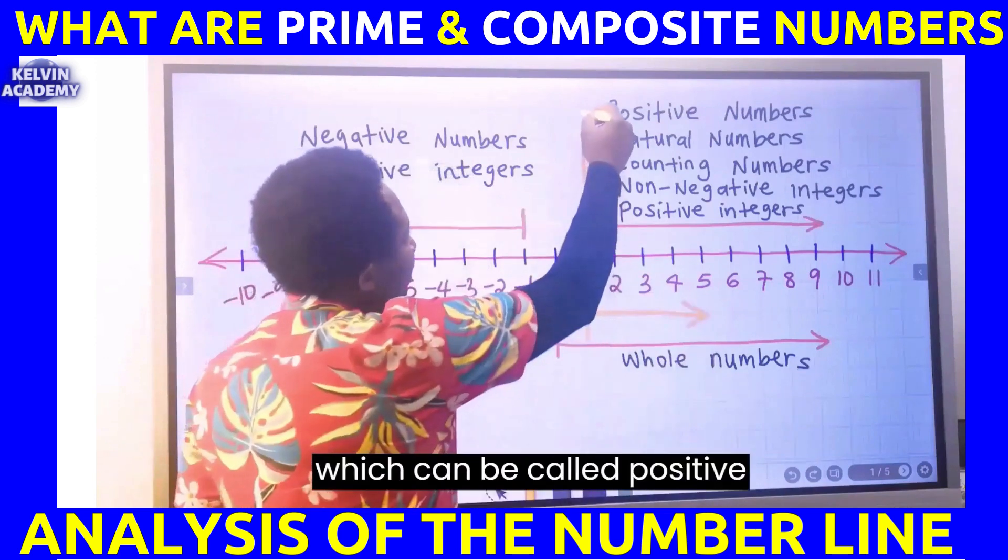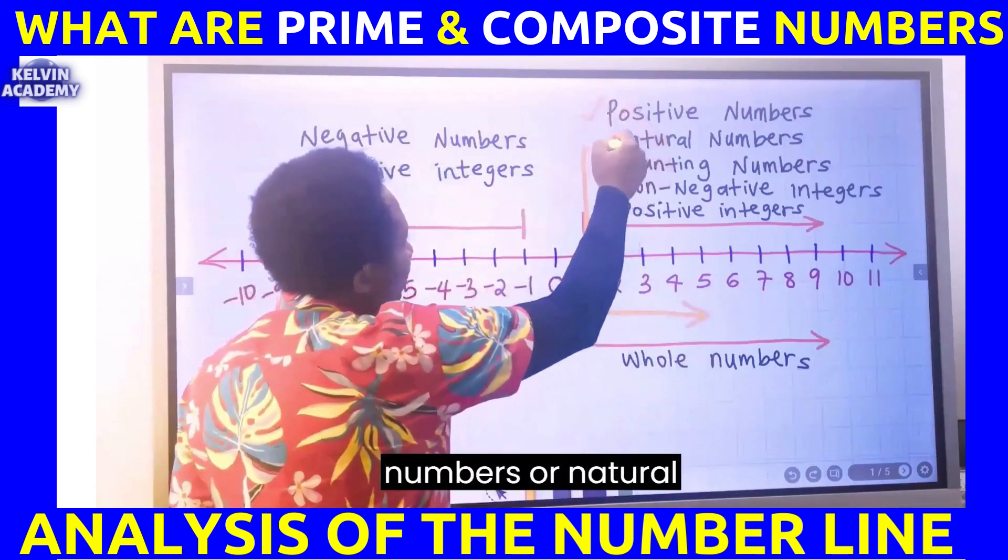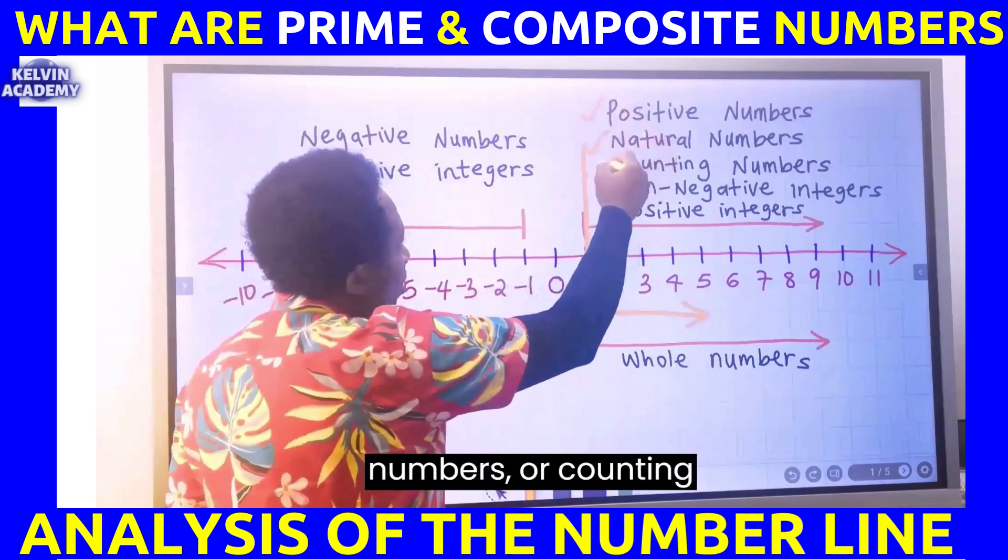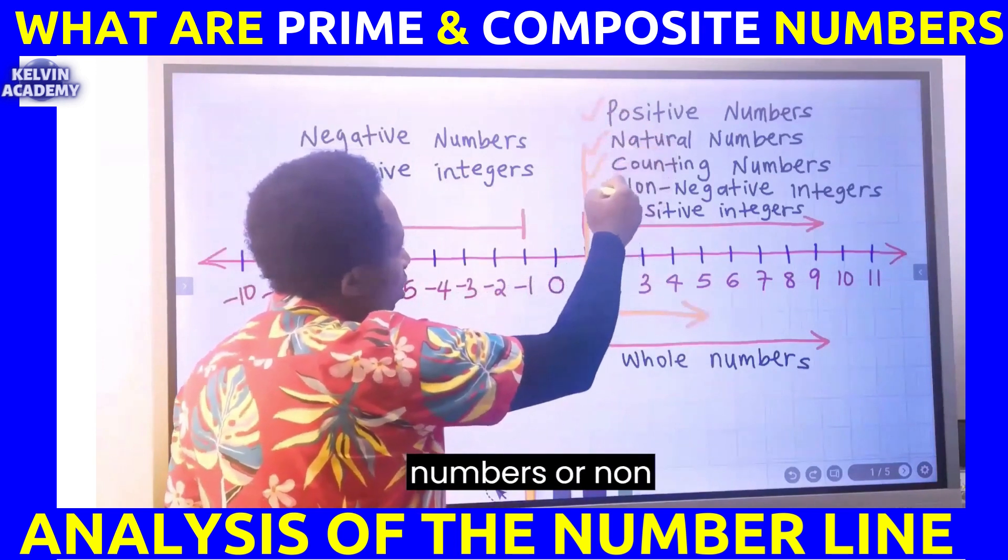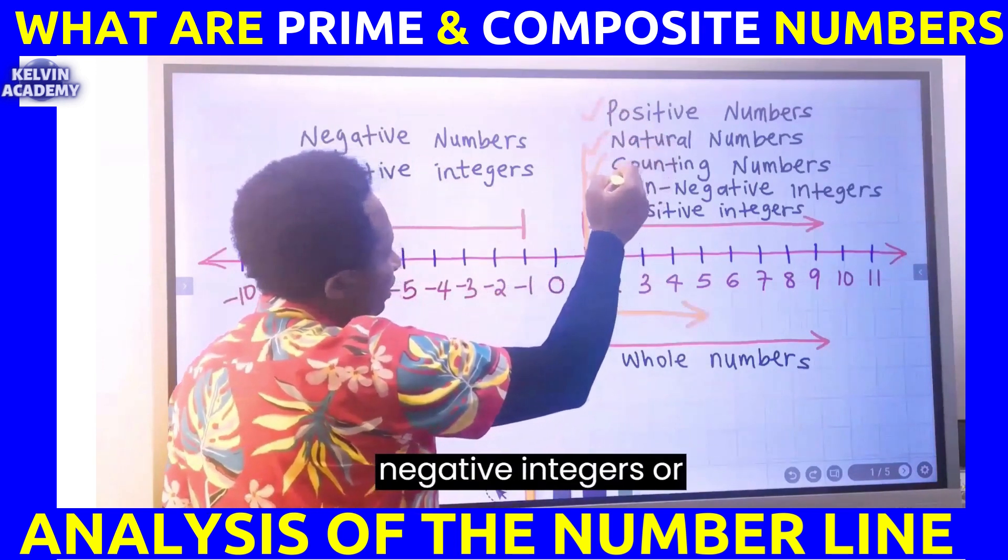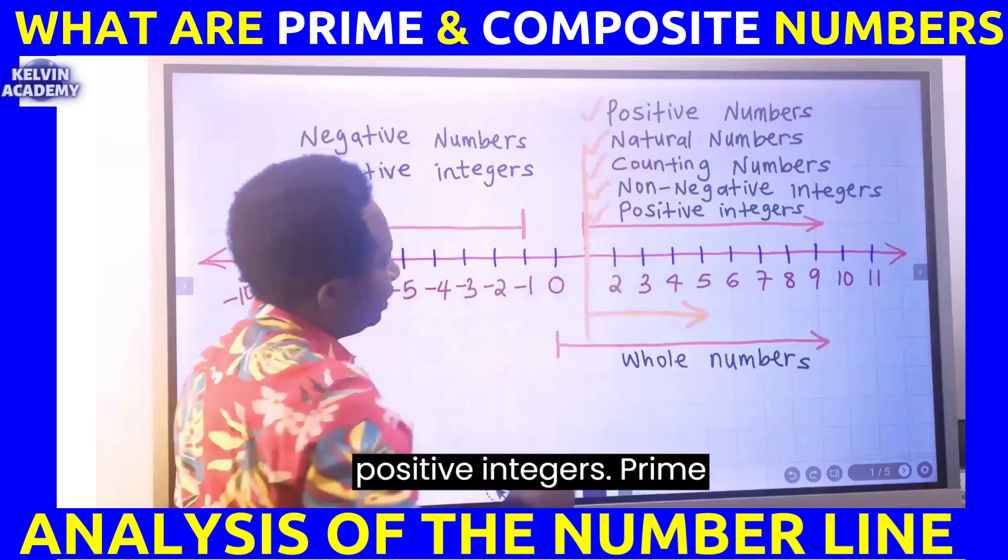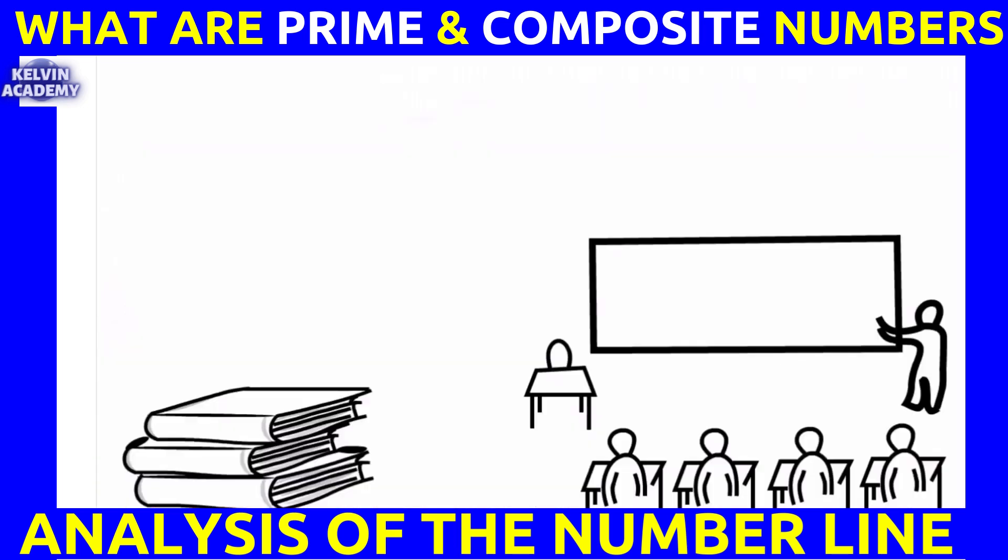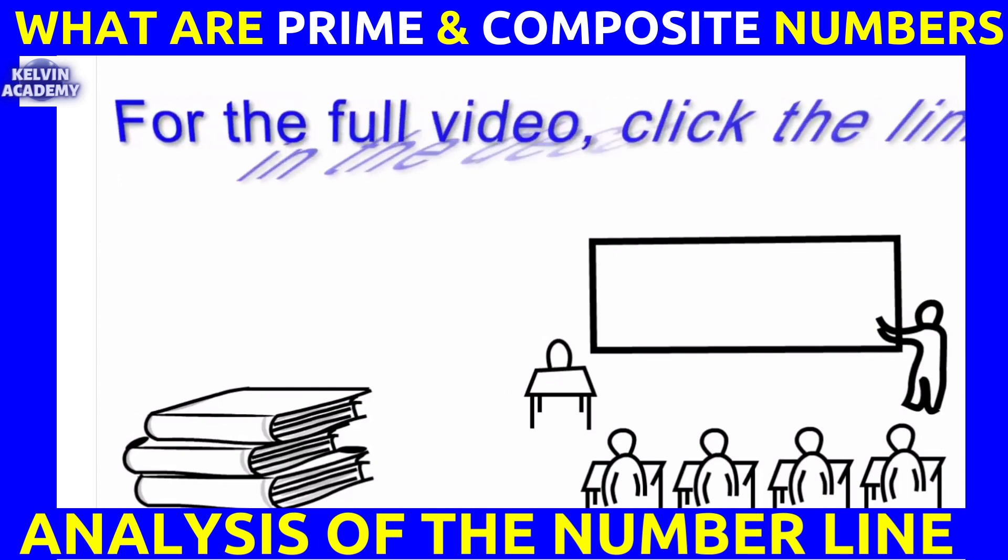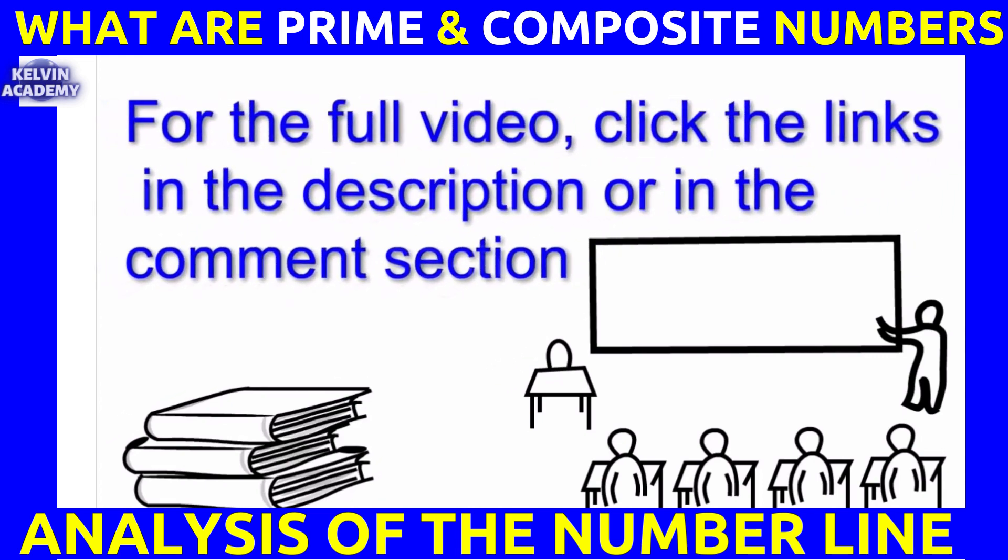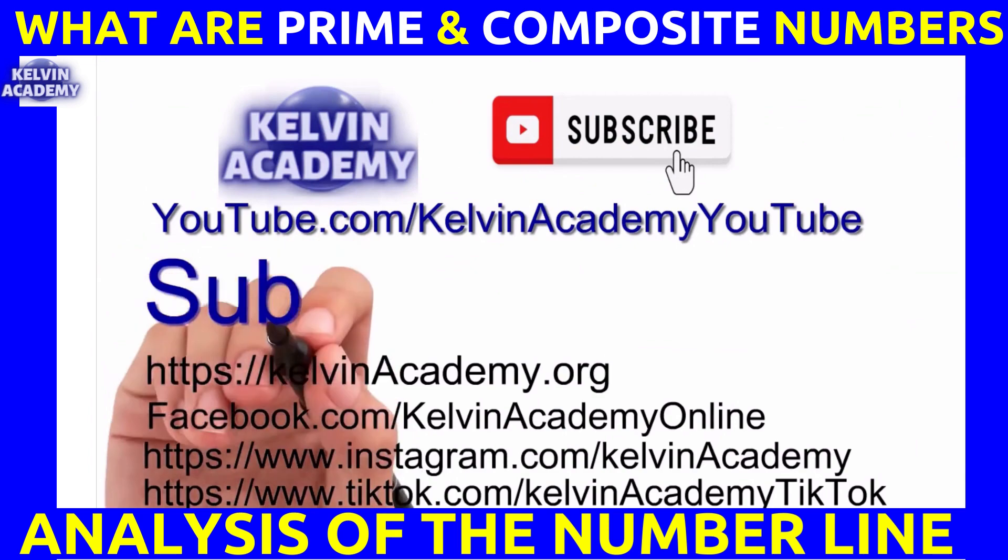be called positive numbers, or natural numbers, or counting numbers, or non-negative integers, or positive integers. For the full video, click the links in the description or in the comment section. Subscribe for more.